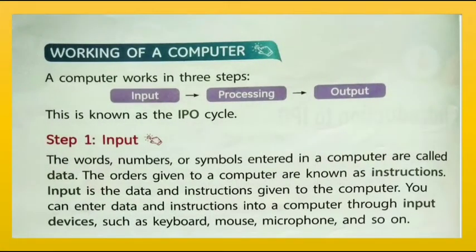Working of a computer: a computer works in three steps — input, processing, and output. This is known as the IPO cycle. Let's understand step one: input. The words, numbers, or symbols entered in a computer are called data.